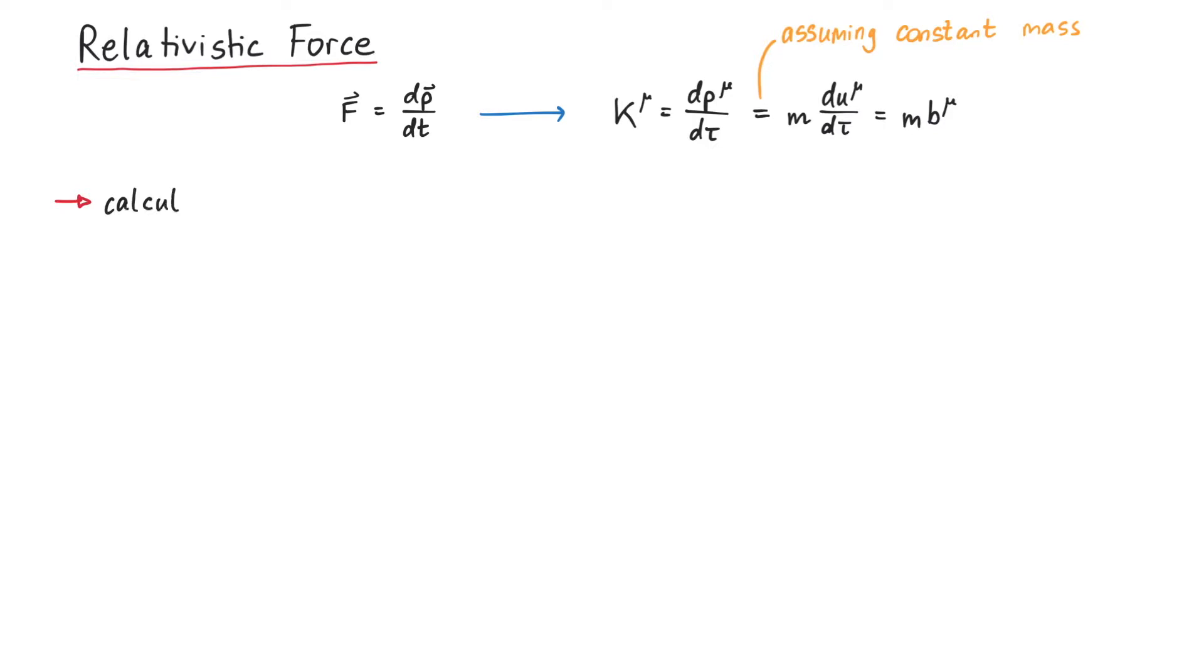First of all, let us calculate the components of the 4-force k mu. To do this, remember that 4-momentum is given by mass times u mu, which is mass times gamma times c v. The zero component k0 is given by the derivative of p0 with respect to the proper time tau.